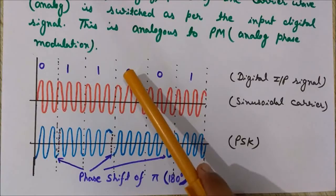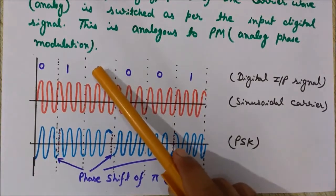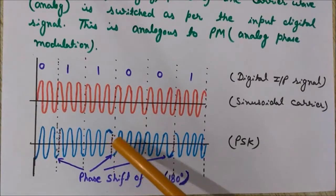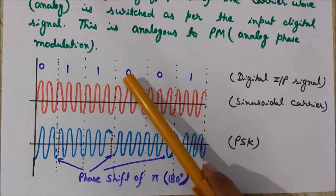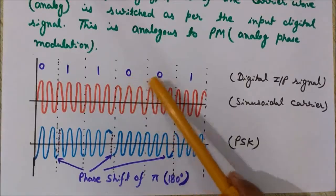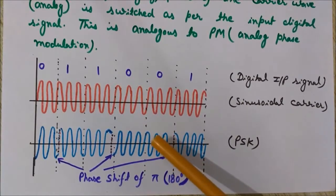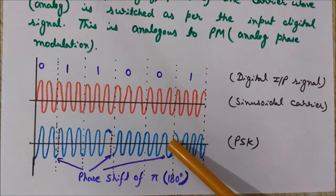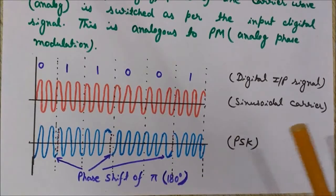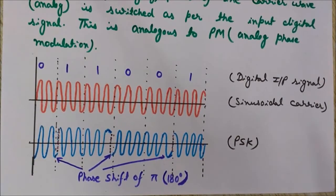At this place there is a phase change from one to zero, so you can see a phase change of pi has taken place here. Now there is no phase change from zero to zero, so the carrier wave is continuously transmitted at this place. And at this place there is a phase shift of pi, which occurs because of the transition from zero to one. So keep this in mind — if there is no change in the input bit, then a continuous sinusoidal carrier wave will be transmitted.